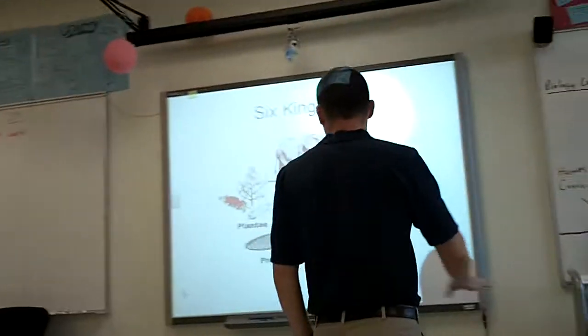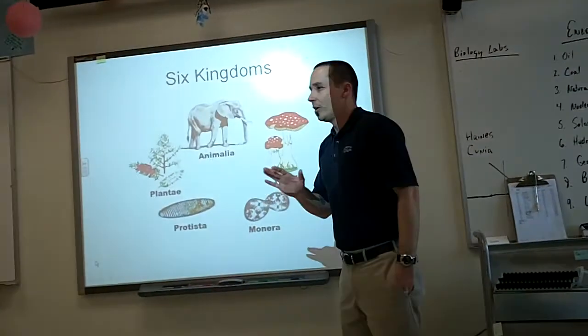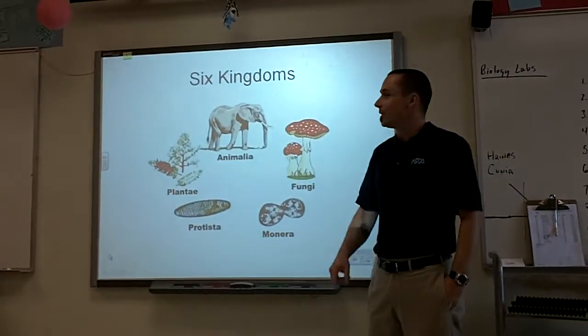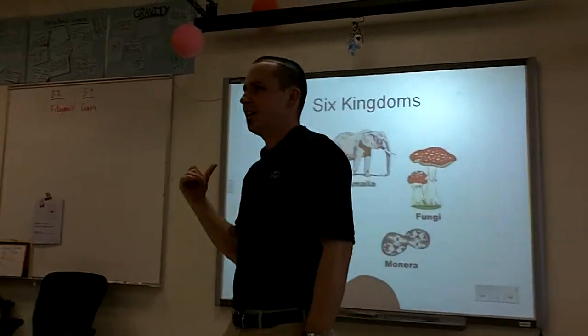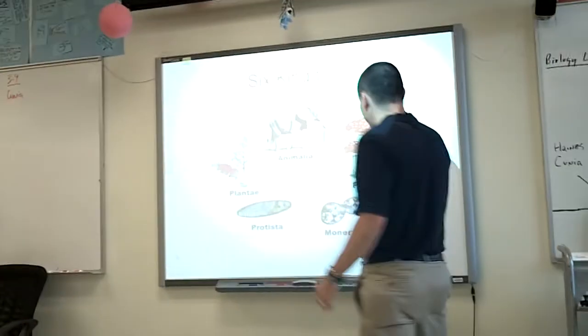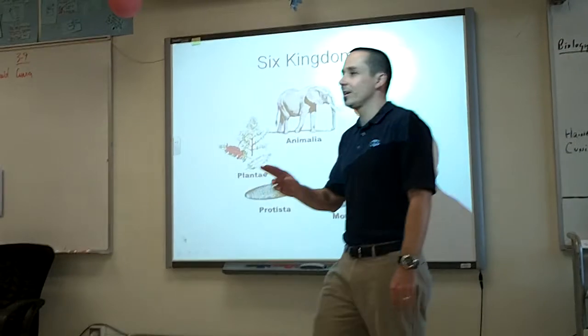Your picture looks different than the picture up here. Notice that you have six kingdoms on your page, but here we only have five. Why are there only five kingdoms on this page but six on yours? Because scientists discovered that there are two different types of bacteria instead of just one kingdom. So these Monerans are now split into two separate kingdoms.